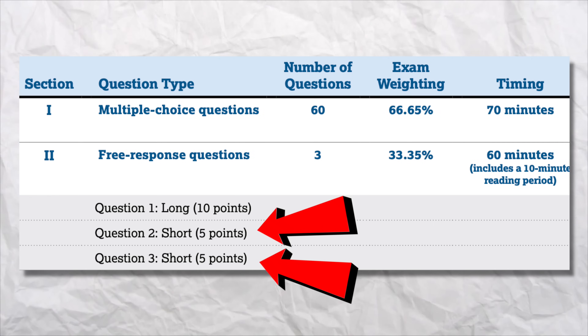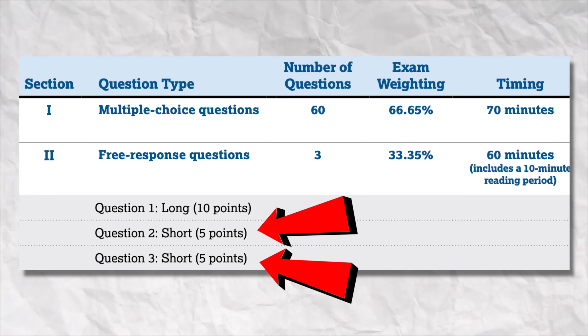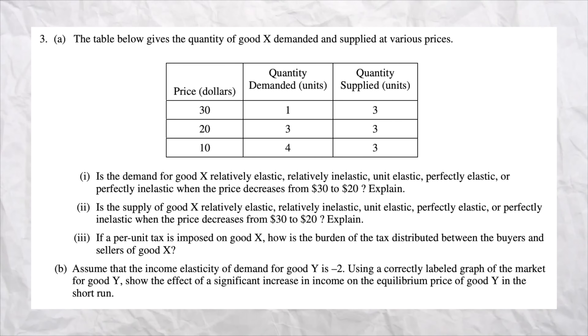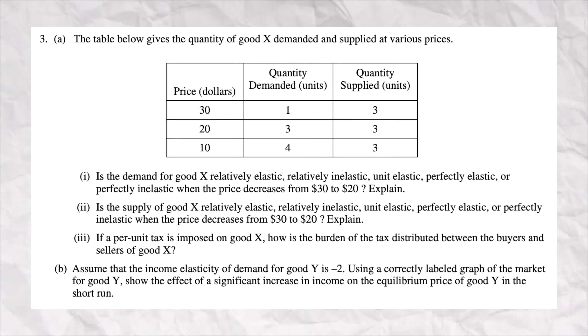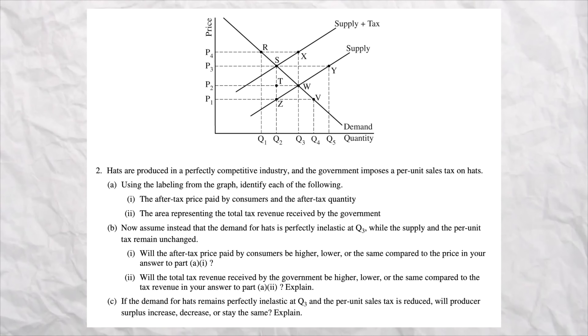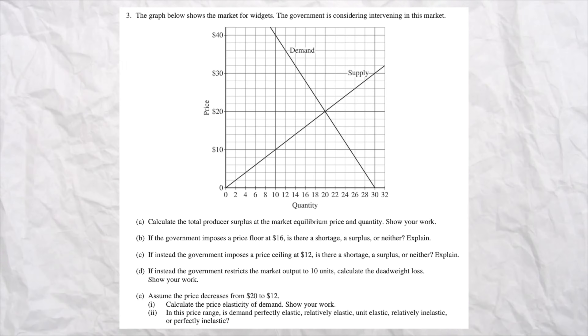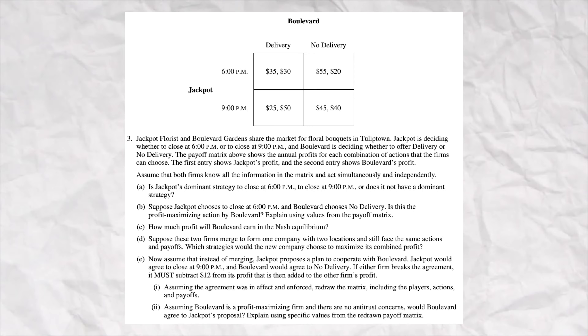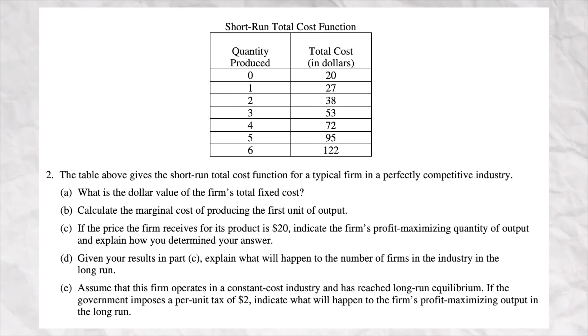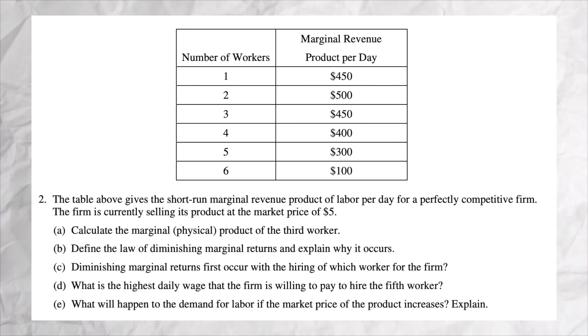Again, that's the first free response. Now, the second and third free responses are usually self-contained — they usually focus on one concept from one unit, like utility maximizing, taxes, elasticity, game theory, cost curves, externalities, or using a chart to maximize profit or to hire workers.